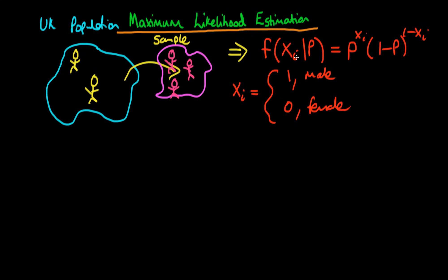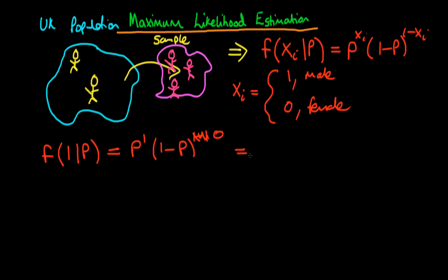This looks quite complicated, so let's talk through how it actually works. If an individual in our sample is male, then f is a function of 1 given p. If we substitute in 1 for xi, we get p to the power 1 times 1 minus p to the power 1 minus 1, which is 0, and anything to the power 0 is just 1. So we're left with p. Our function f tells us: if that individual was male, what is the probability that we would have got that observation? And that's just p, the probability that an individual is male.